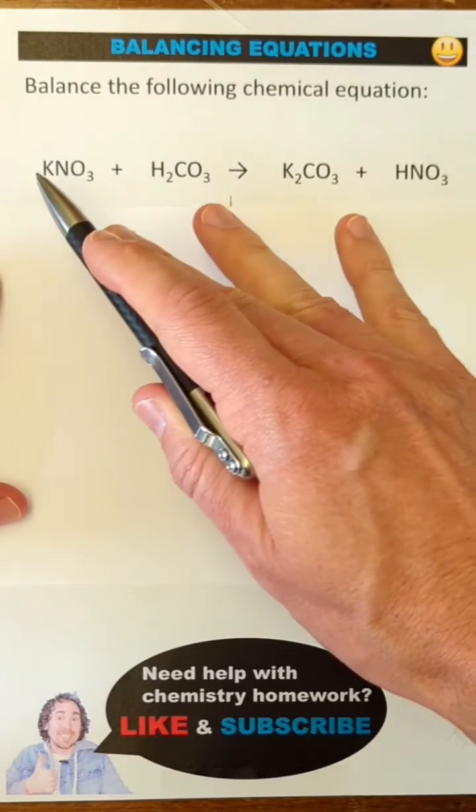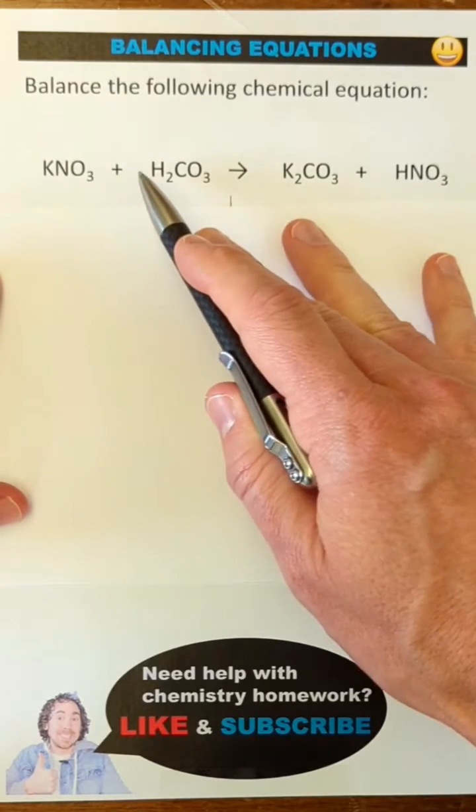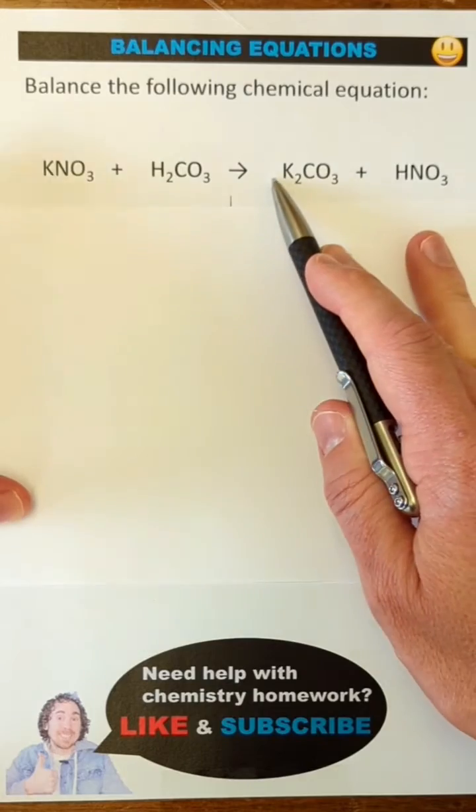Balancing a chemical equation means that we need to add appropriate coefficients so that there's the same number of atoms on both sides of the reaction arrow.